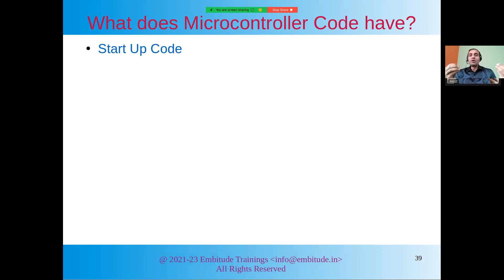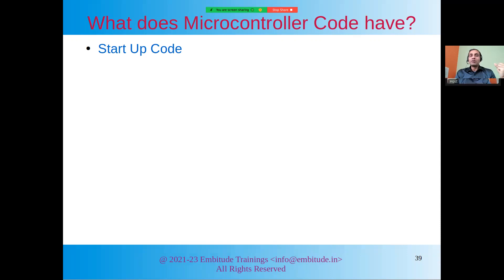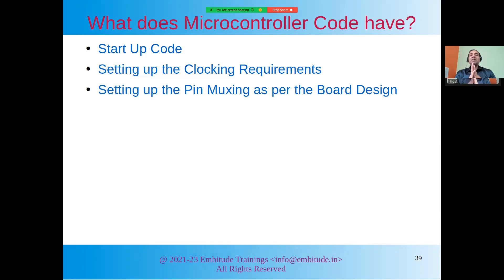To know more about startup code, you may search for the STM32 microcontroller startup code, which is explained in a very clear manner — I'll put the link in the description. Next, what you will need for your microcontroller is setting up the clocking requirements. For example, in STM32 you have the APB bus, AHB bus, and similar buses whose clocks need to be initialized, along with peripheral clocks and PLL-related stuff.